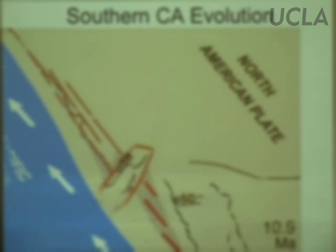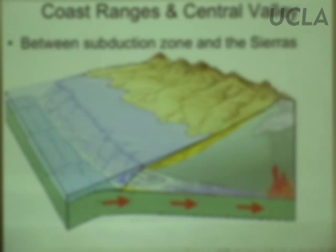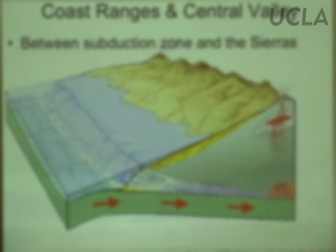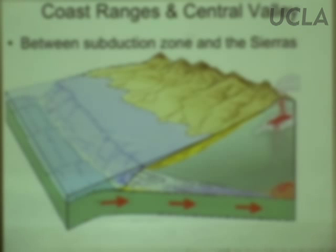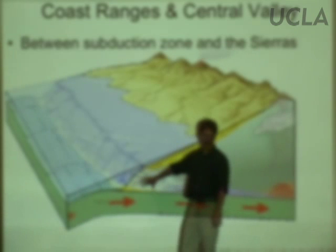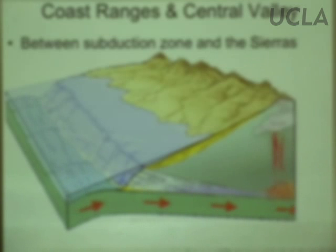Looking at this in a more static way, starting with the original configuration — from an animation by Tanya Atwater at UC Santa Barbara — we can see California when it was a convergent boundary. We had seafloor oceanic lithosphere subducting underneath the west coast of North America. Oceanic crust was going down, and sediments on top of the oceanic crust got scraped off and piled up like snow in front of a snowplow on the edge of the North American continent.